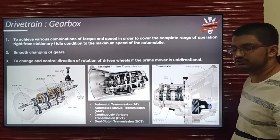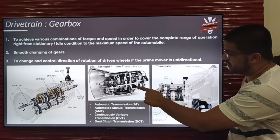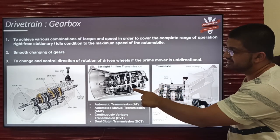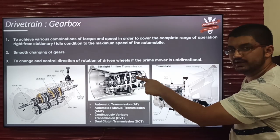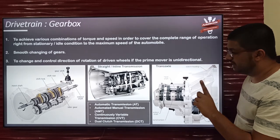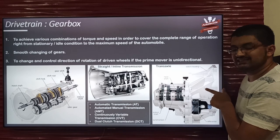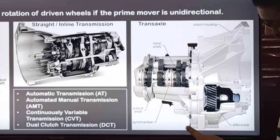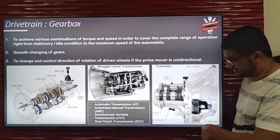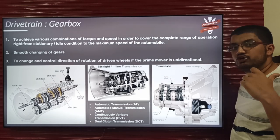Coming back to the gearbox slide: there is a difference between two types of gearboxes. This is a straight or inline transmission, and this is a transaxle. The only difference is that the straight or inline transmission does not have the differential incorporated in it, but the transaxle has the differential incorporated by default — there is no external differential. In case of the straight or inline transmission, we need a separate rear axle to incorporate the differential.